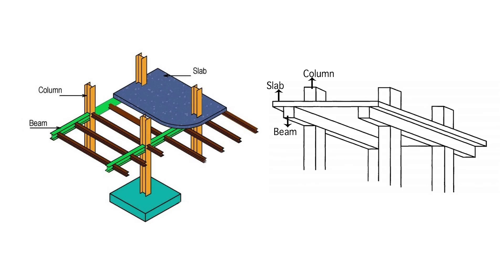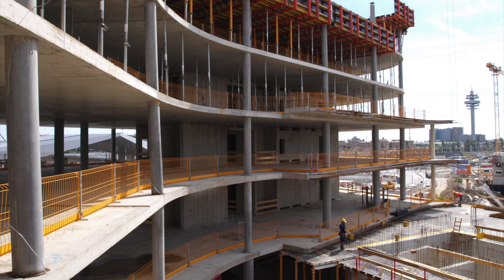First, what is a flat slab? Common practice of design and construction is to support the slabs by beams and support the beams by the columns. This is called beam slab construction. The beams reduce the available net clear ceiling height. Hence in warehouses, offices, and public halls, sometimes beams are avoided and slabs are directly supported by the columns. This type of construction is aesthetically appealing also.